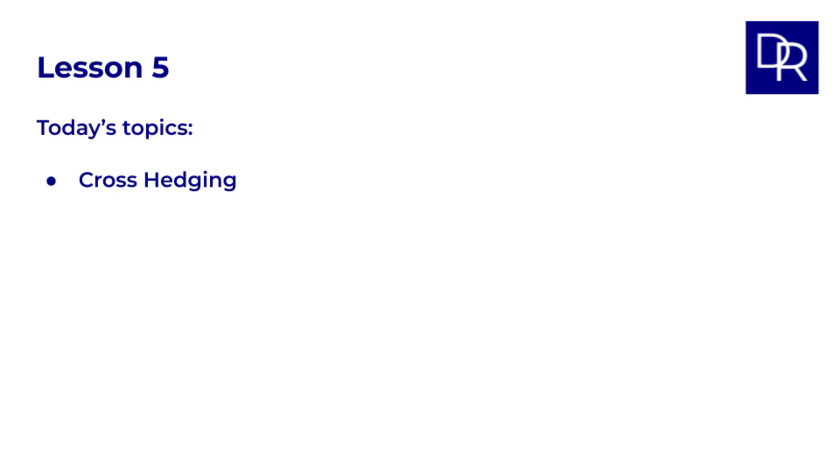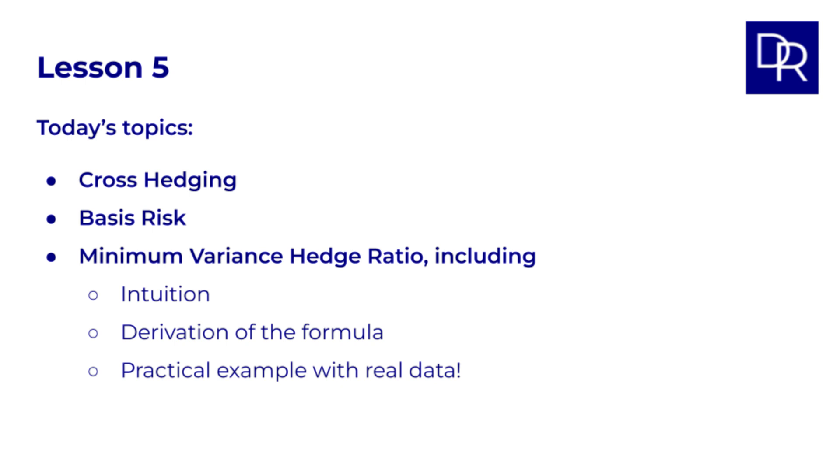Today we'll explore what cross hedging is, why it introduces a new type of risk, called basis risk, and most importantly, how to minimize that risk using the minimum variance hedge ratio. I won't just give you the formula, I'll explain the intuition, we'll see where the formula actually comes from, and we'll look at an example with real data.